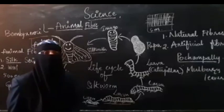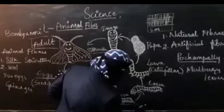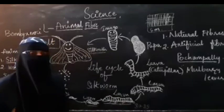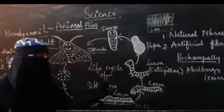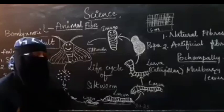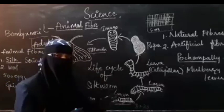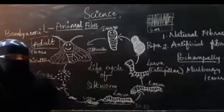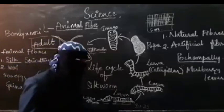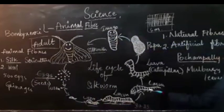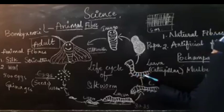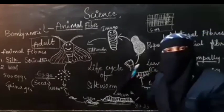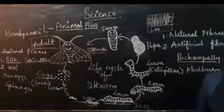The larvae will eat leaves continuously for 30 to 35 days, day and night. The place where the larvae are kept should be hygienic — the leaves should be clean, not rotten or dried up. They also need proper sunlight. After 30 to 35 days, the larvae will stop eating and will have grown into a caterpillar.